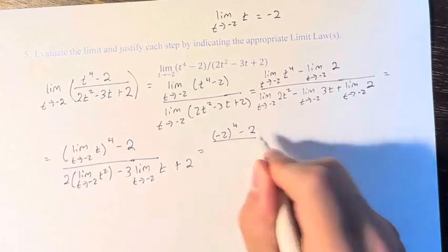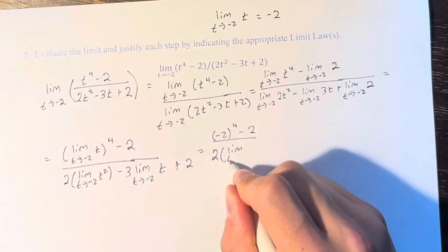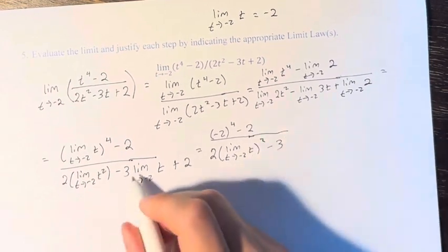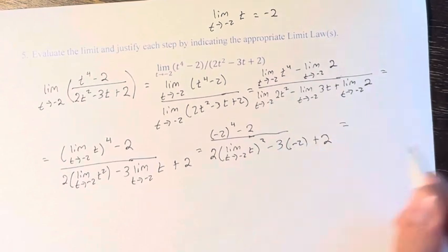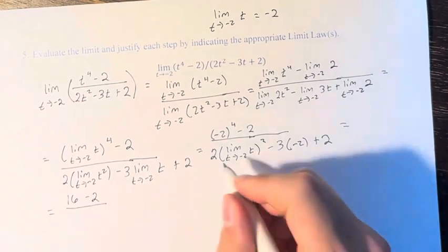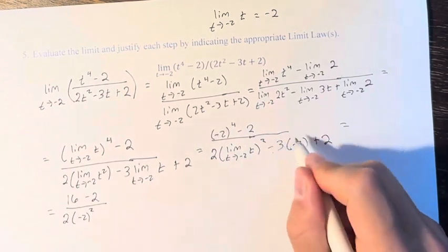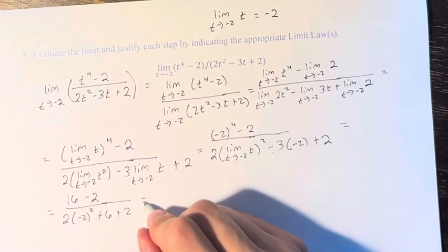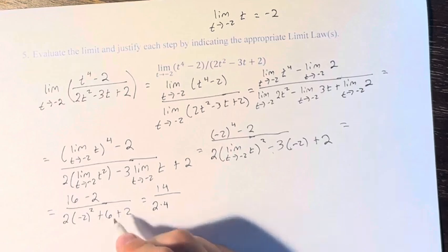So we have negative 2 to the 4th over 2 times the limit of t squared, minus 3 times the limit of t which is negative 2, plus 2. Negative 2 to the 4th is 16, minus 2. The limit of t is negative 2, so this is 2 times negative 2 squared. Negative 3 times negative 2 is plus 6, plus 2. 16 minus 2 is 14. Negative 2 squared is 4, so this is 2 times 4. 6 plus 2 is 8.